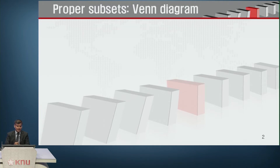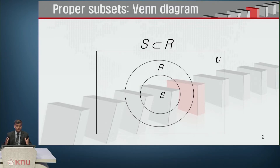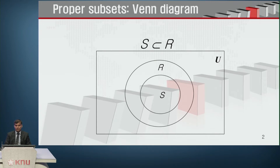Let us use a Venn diagram to represent a proper subset. A Venn diagram is a very strong tool and very easy for us to grasp the exact meaning, because it can be expressed by means of a pictorial representation that is easy to understand. Here you have this universe, and within this universe you have two sets — set R, and within set R you have set S. You can rightly say that S is a proper subset of R, because R has something that S does not have, and R has all elements that S has.